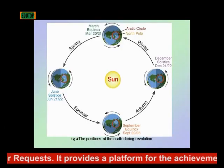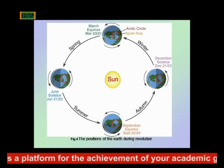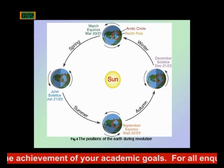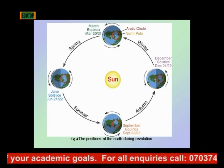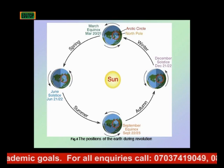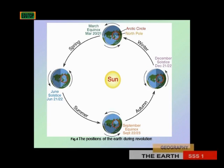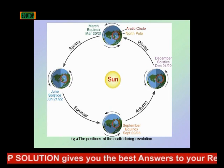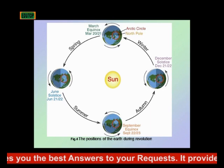This is a typical illustration of what we have just talked about. You can see the sun in the middle and the earth revolving around it. These are the four significant positions on the earth during the revolution. At each position, different things occur.